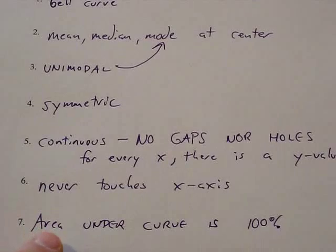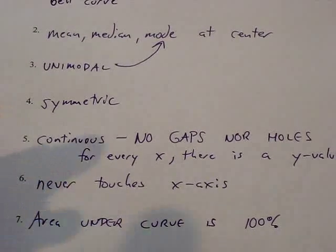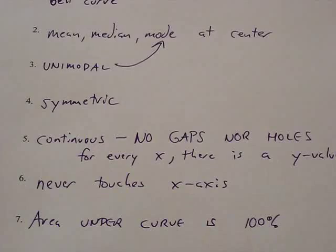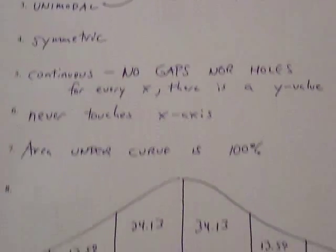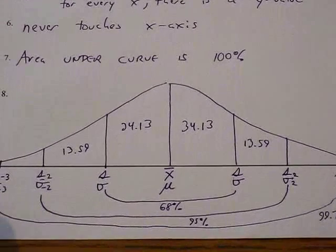The area under the curve is 100% of the data. Using a little bit of calculus, you can actually prove that this is true, even though the graph never touches the x-axis. 100% of your data is there. And now what I'm going to do is show you a picture which is illustrated in your book about the normal curve.